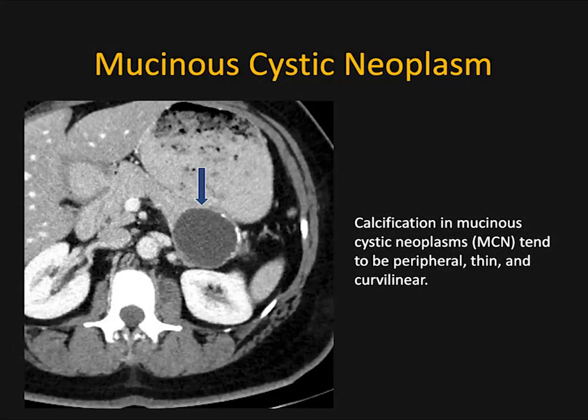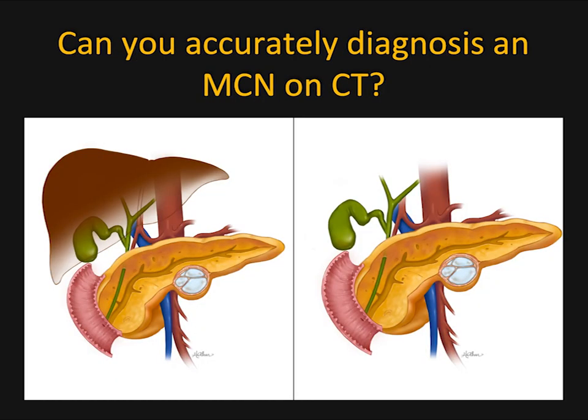When you see calcification in a mucinocystic neoplasm, it tends to be peripheral, thin, and curvilinear. But when you see calcifications, you really worry a lot more — could this be a high-grade dysplasia or malignancy?